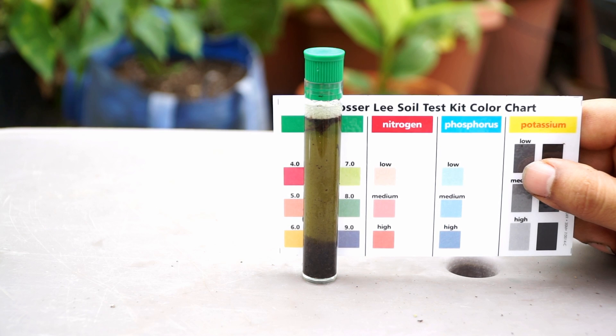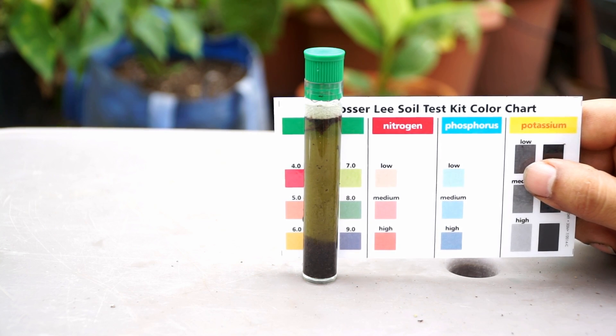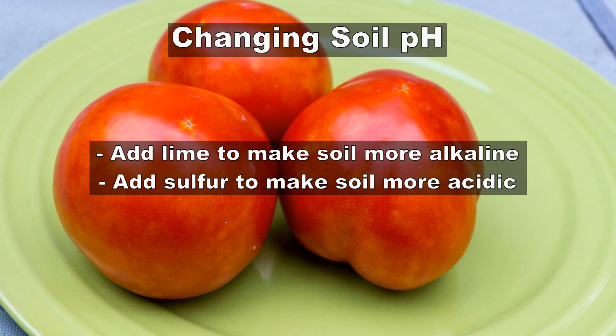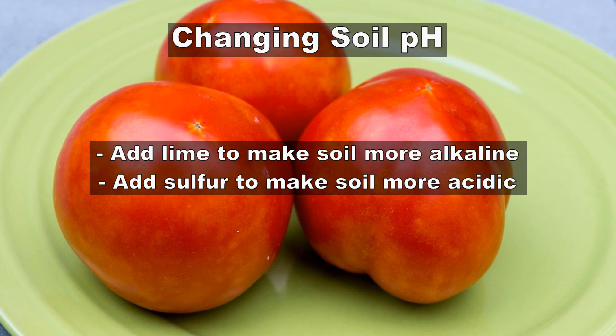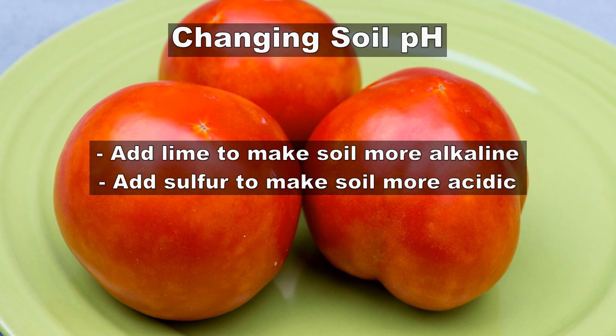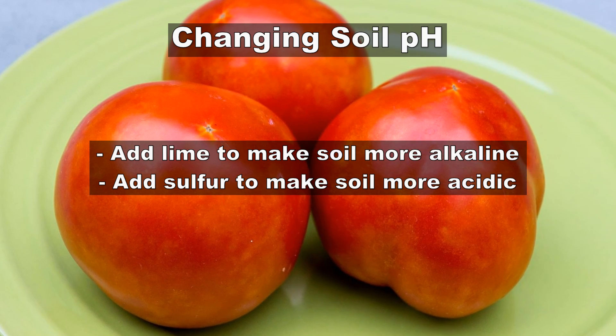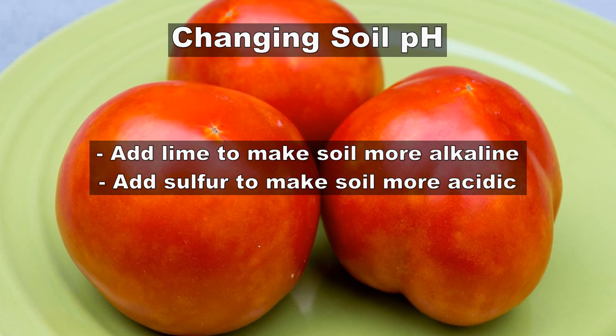However, some plants do like higher or lower pH. Changing soil pH is very easy. You add garden lime to make the soil more alkaline and sulfur to make the soil more acidic. Remember that some plants do prefer acidic soil like blueberries, so be careful what you're doing.